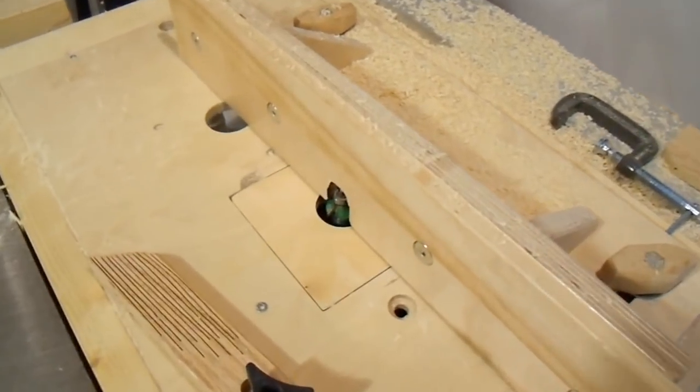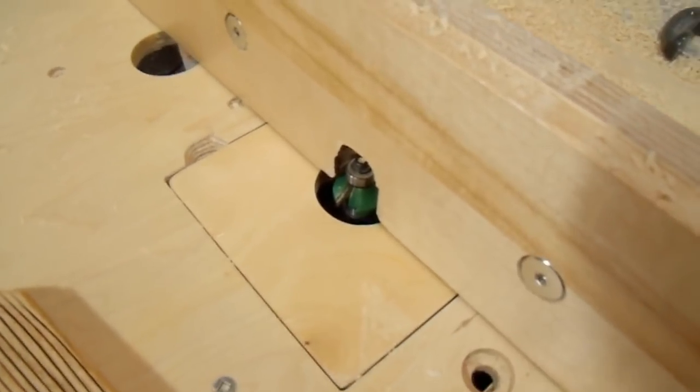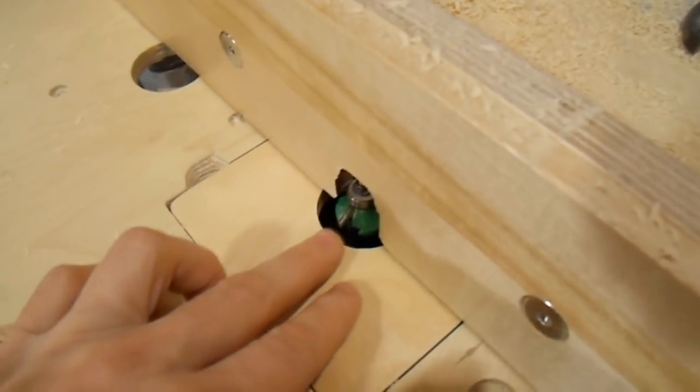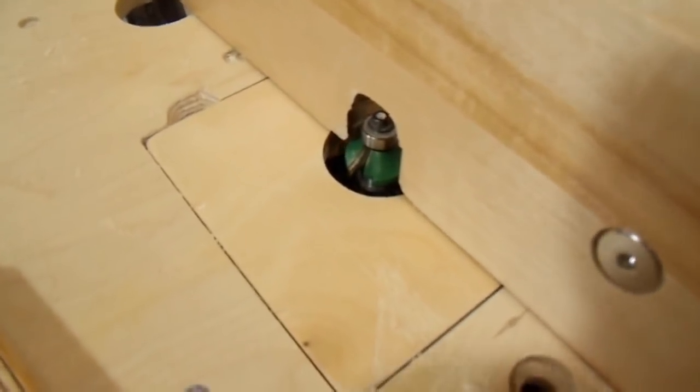Now, the easiest way to cut the corners off of my sticks that are gonna be dowels is to use a router table. And I could use a chamfer bit to cut the corners off to make it essentially octagonal. But a round over bit works really well too.